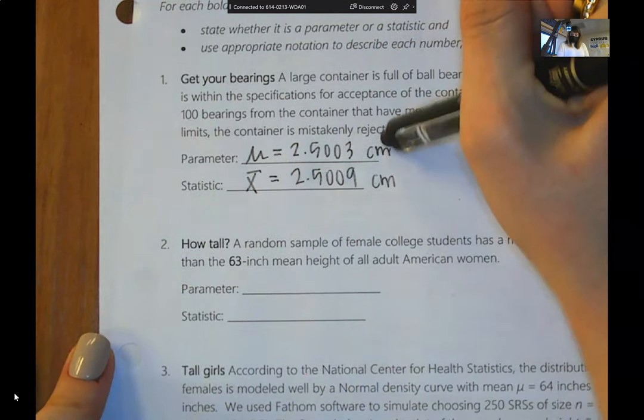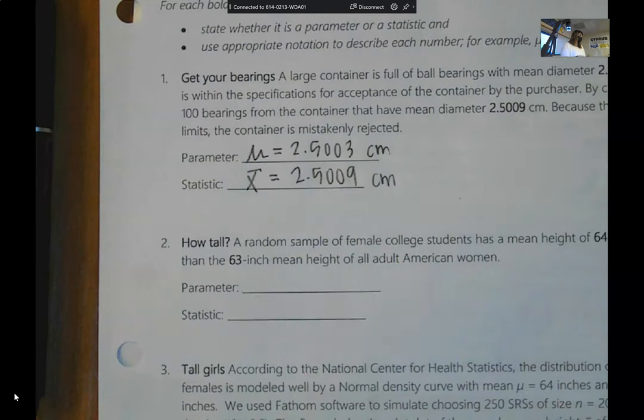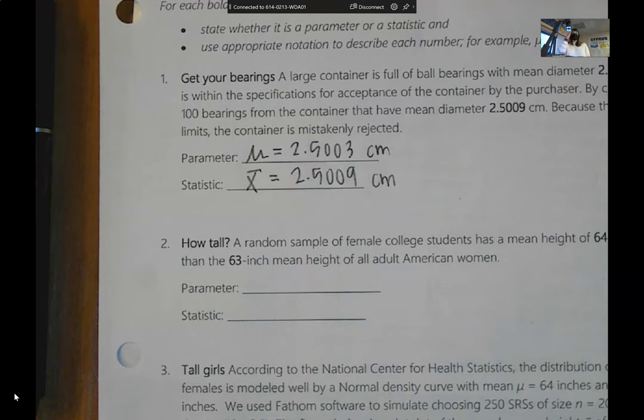By chance, an inspector chooses 100 bearings from the container, and they have a mean diameter of 2.5009. This is your statistic. And depending on what kind of engineer you are, engineers do this frequently.